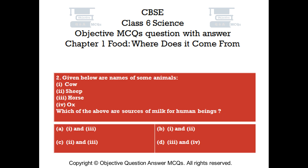Question number 2. Given below are names of some animals: Cow, Sheep, Horse, Ox. Which of the above are sources of milk for human beings?